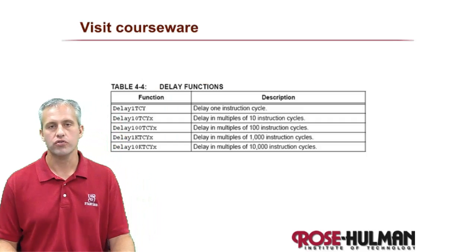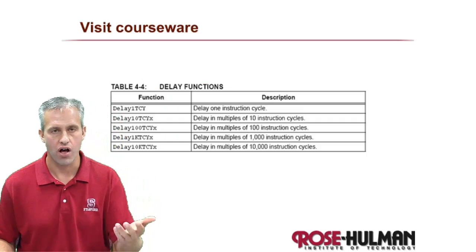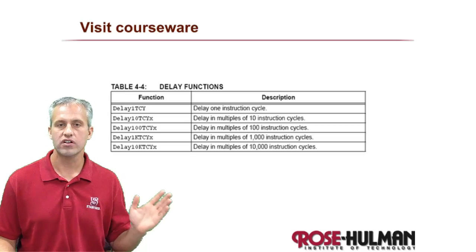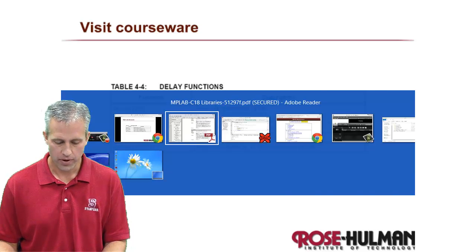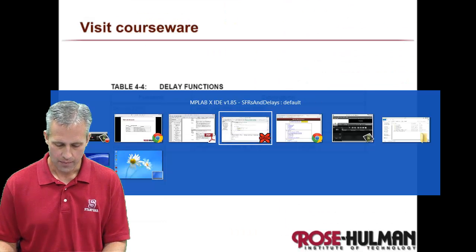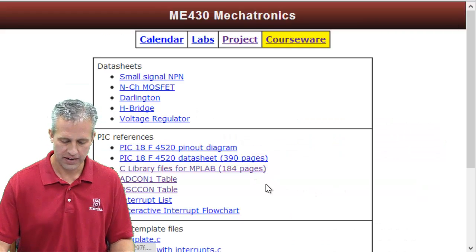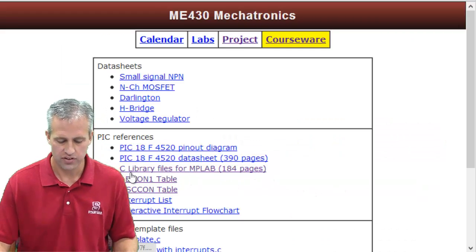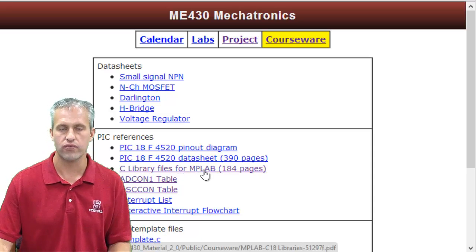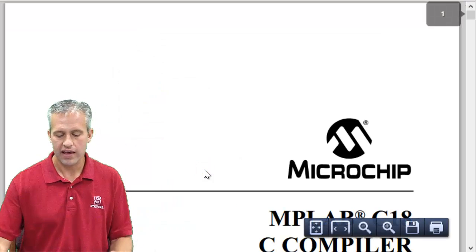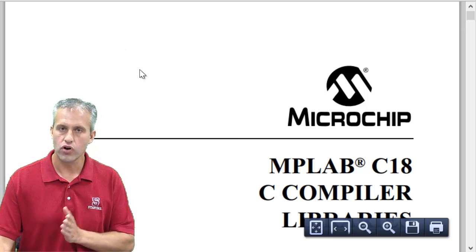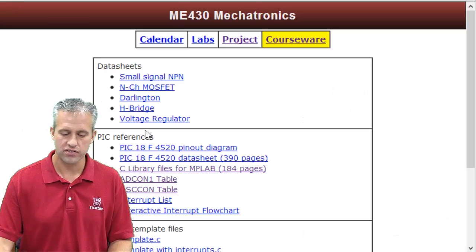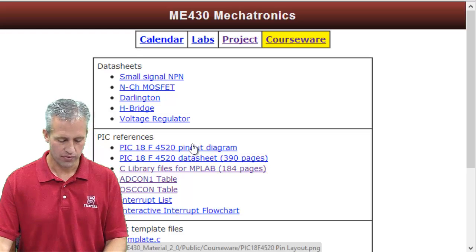So this library that we're going to use consists of five functions, all say delay something, and they let you delay for a certain number of instruction cycles. To learn more about it, let's go ahead and open up courseware, and make sure that you've got this PDF. This PDF is the C library files for the MC18 compiler we're using. If you like, you can open it in Chrome. The trouble is Chrome's PDF viewer doesn't give you a table of contents, and I actually find the table of contents useful.